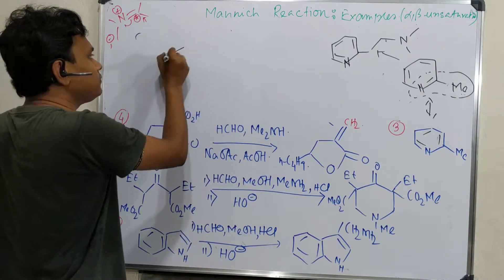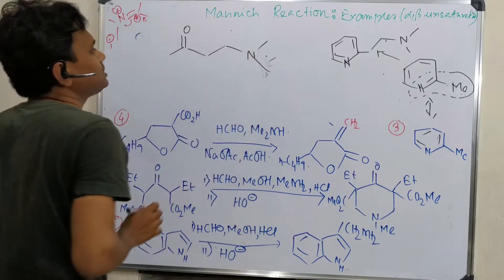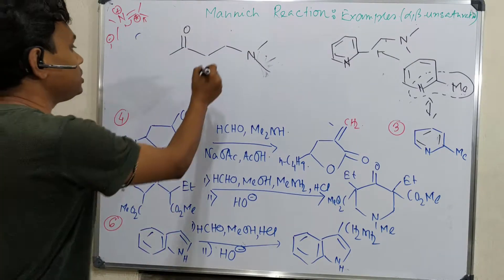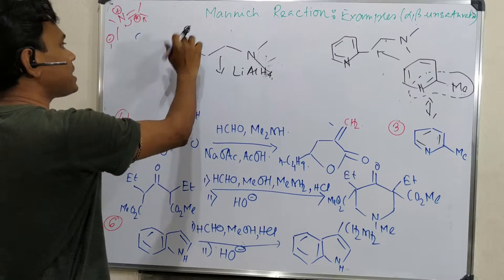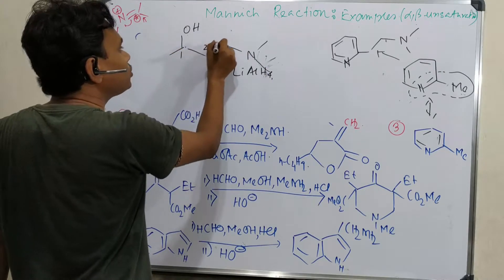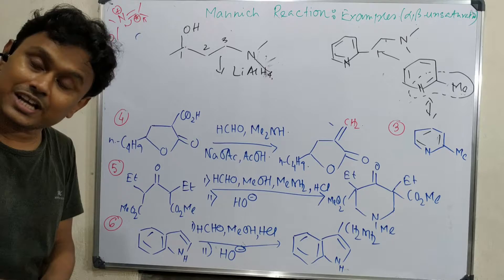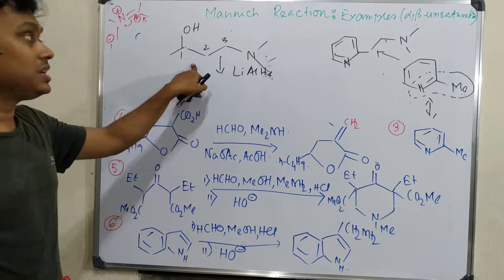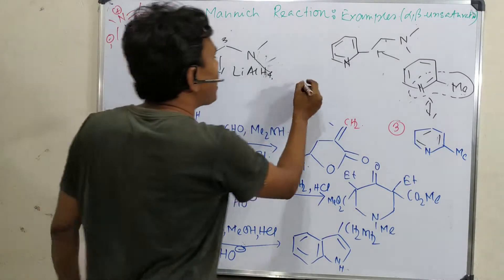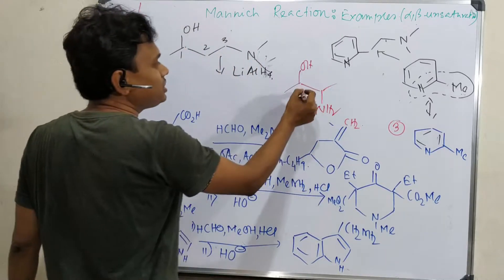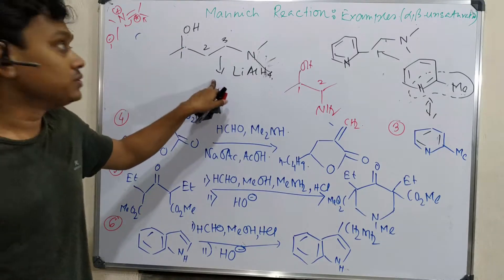So ultimately you can see this is a 1,3 amino alcohol that can be prepared. In a previous video I made about the Henry reaction (nitro-aldol reaction), the ultimate product is a 1,2 relationship — carbonyl and nitro, if both are reduced, produce a 1,2-amino alcohol derivative. So 1,2-amino alcohol derivatives can be prepared via the Henry reaction, while 1,3-amino alcohol derivatives can be prepared via this Mannich reaction.